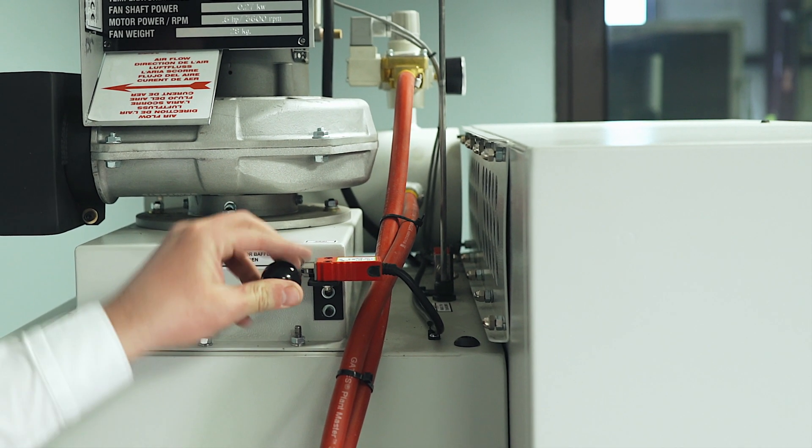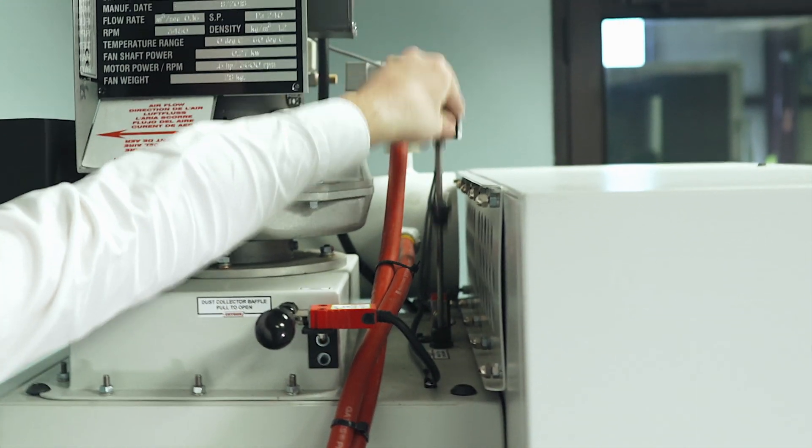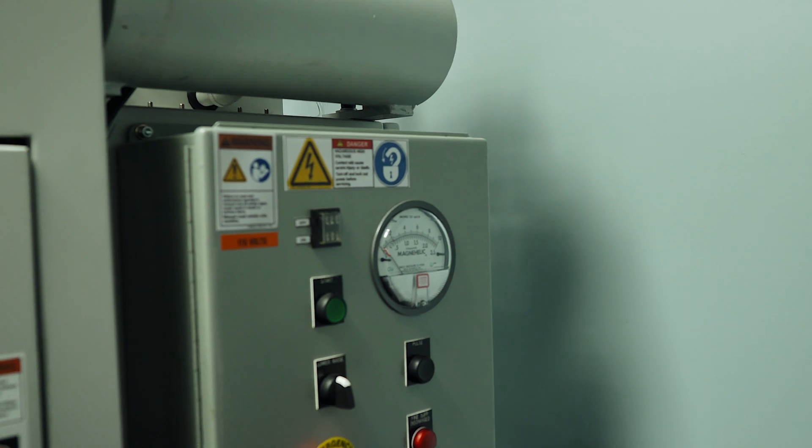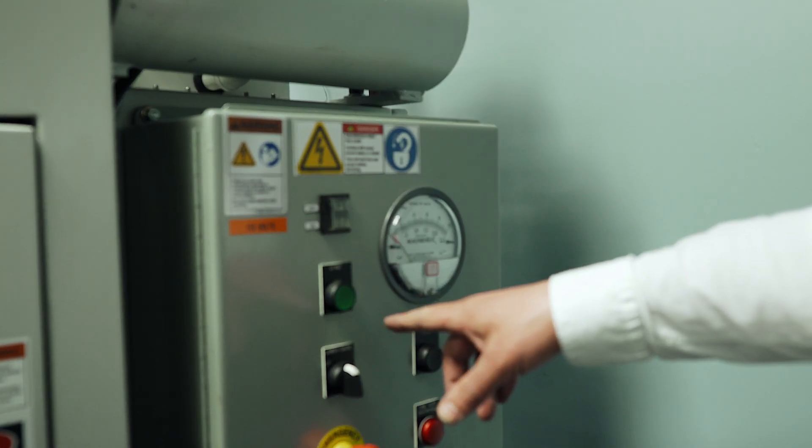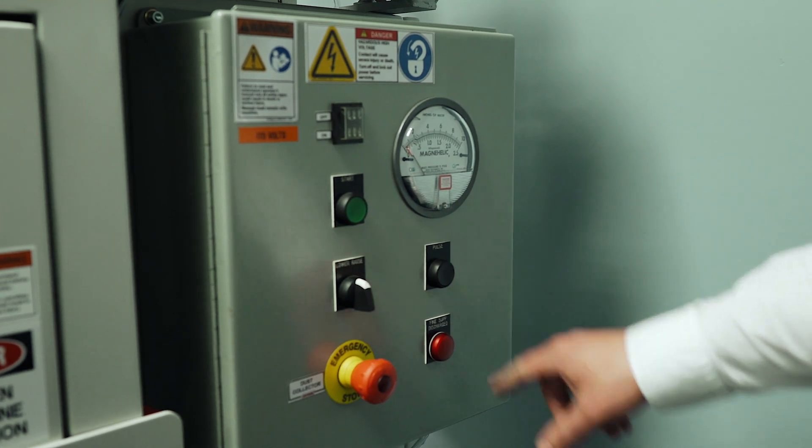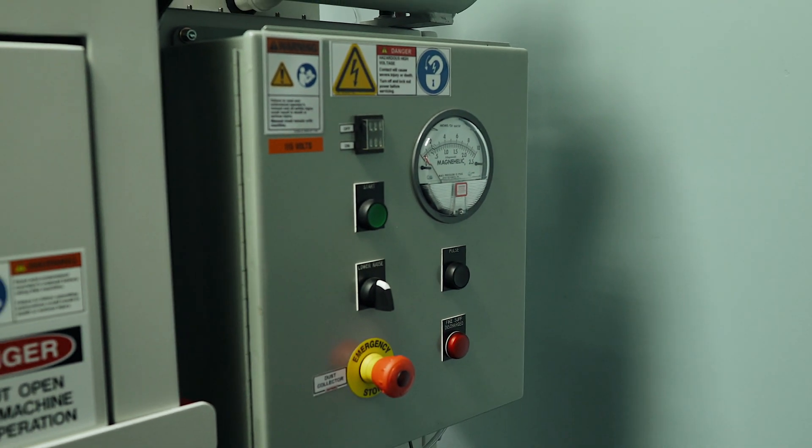In order to pulse the dust collector, both slide gates have to be closed. In order to pulse, the system has to be on, but the dust collector off. Don't hit the start button, but press the pulse button. This purges the filter of any debris that it has collected.